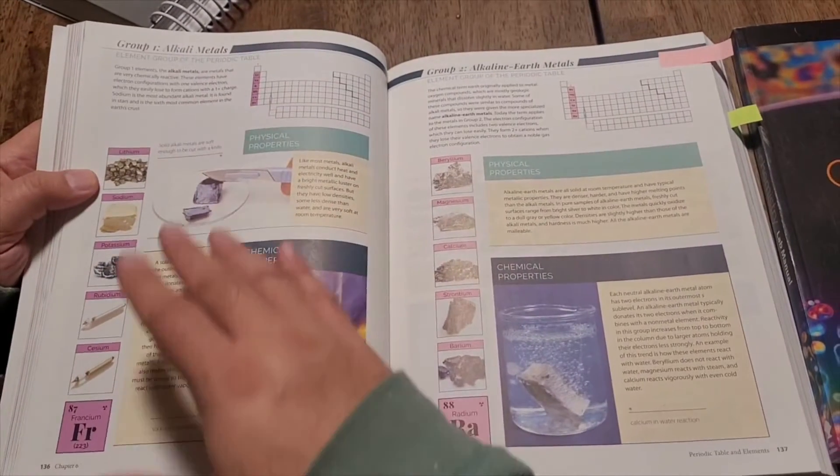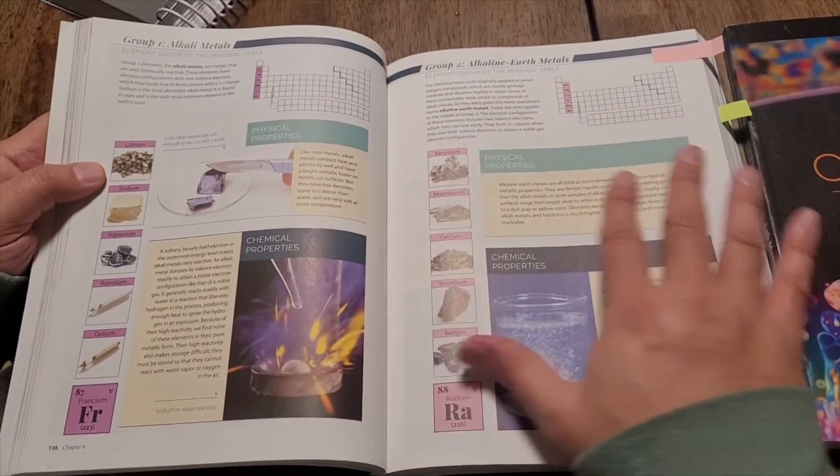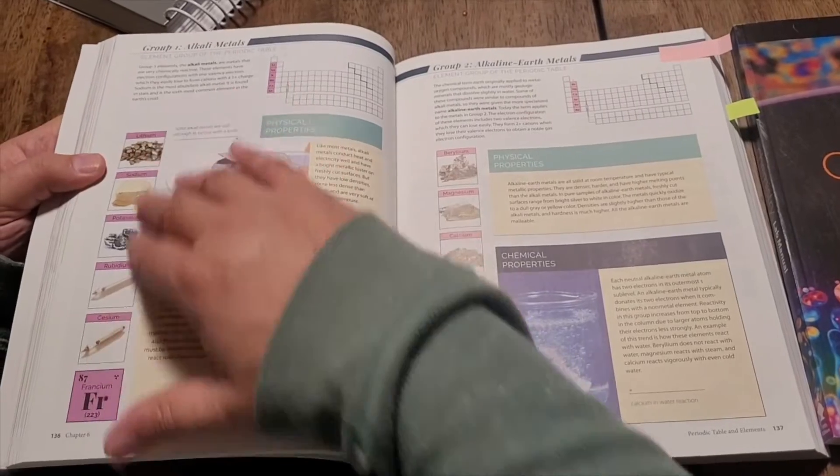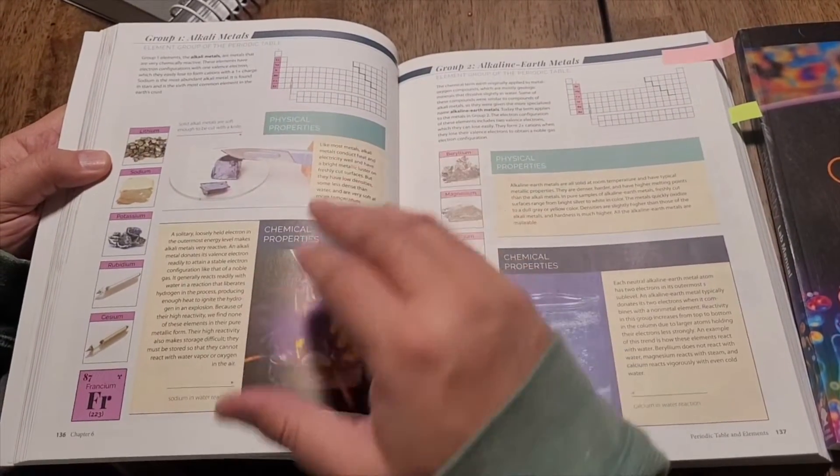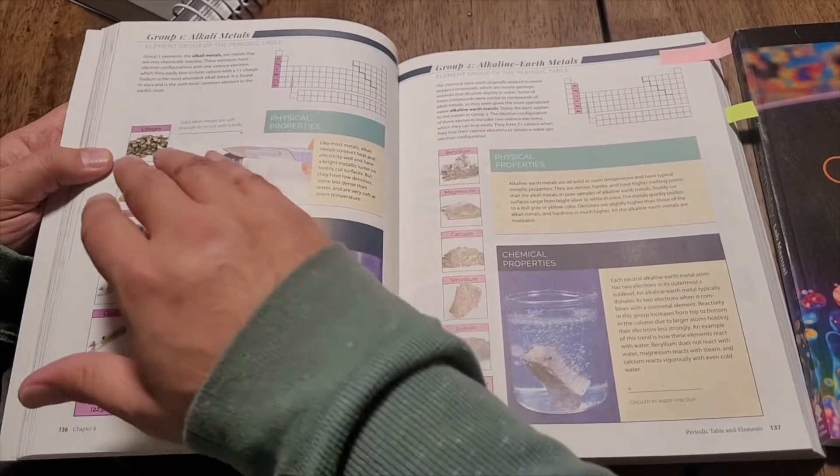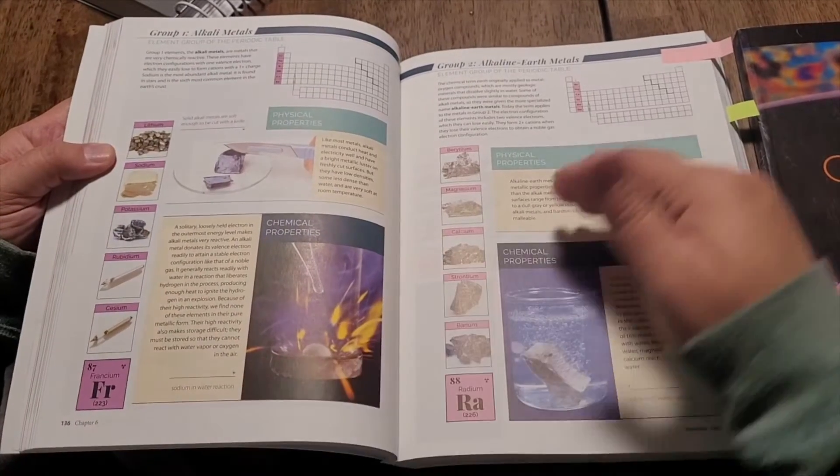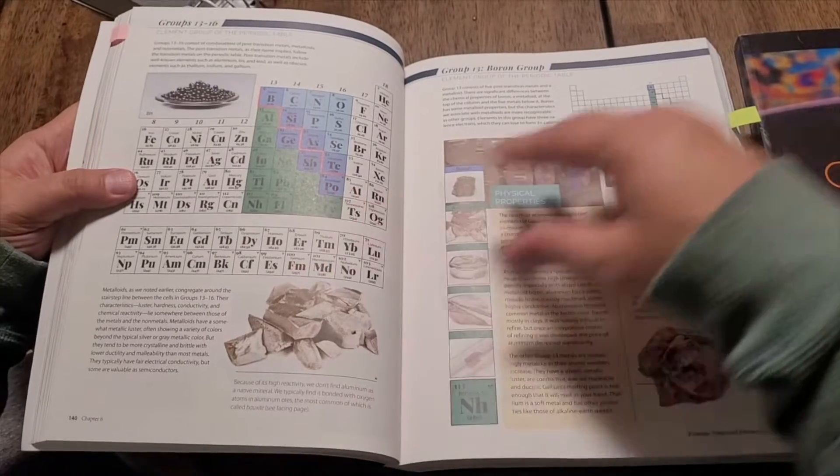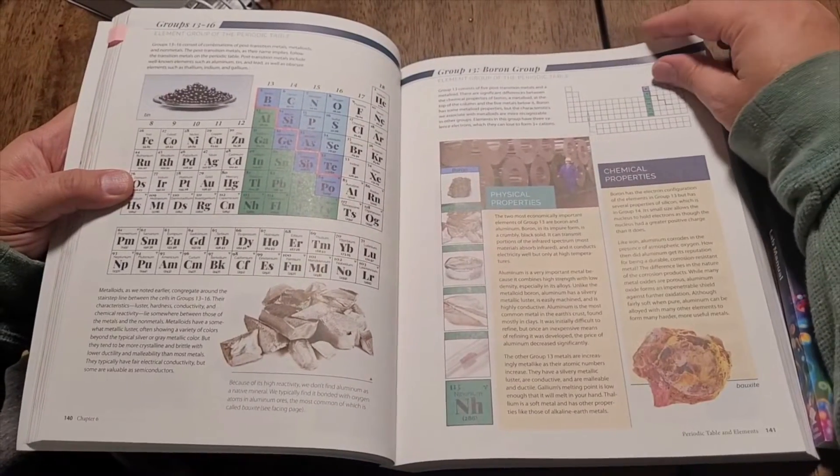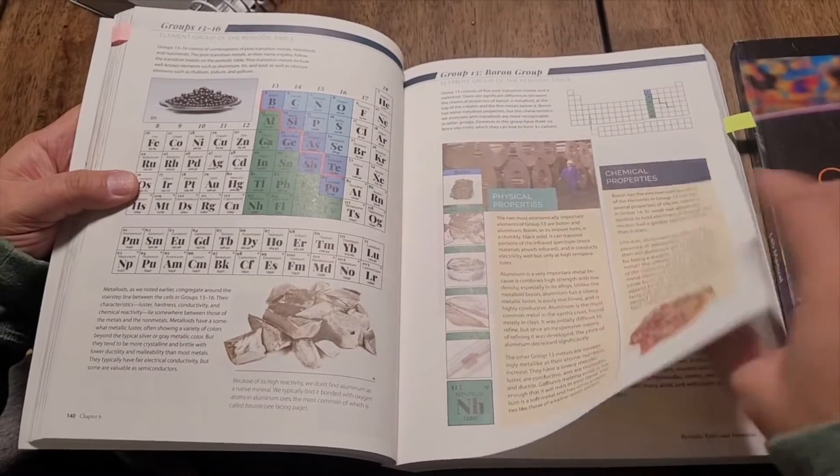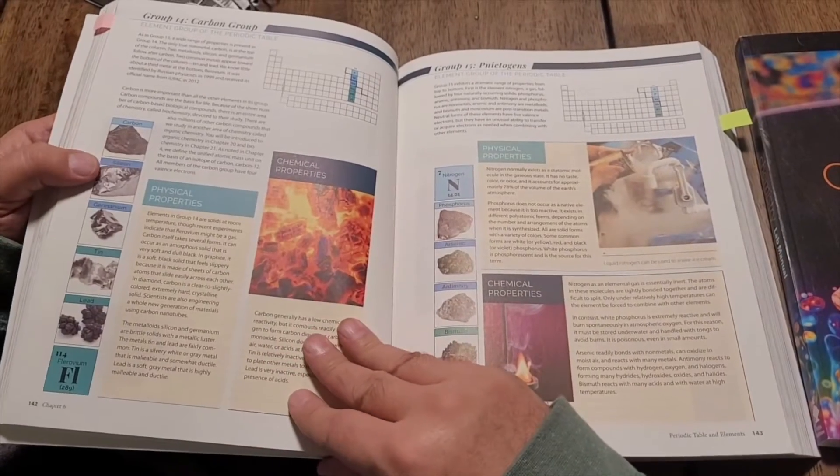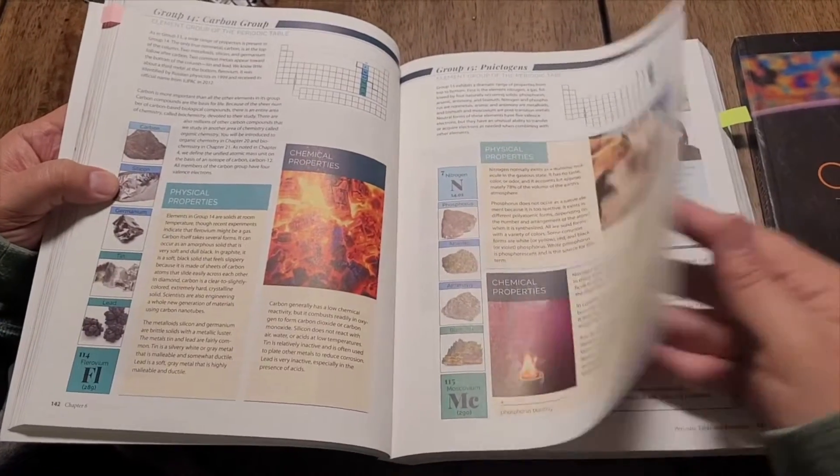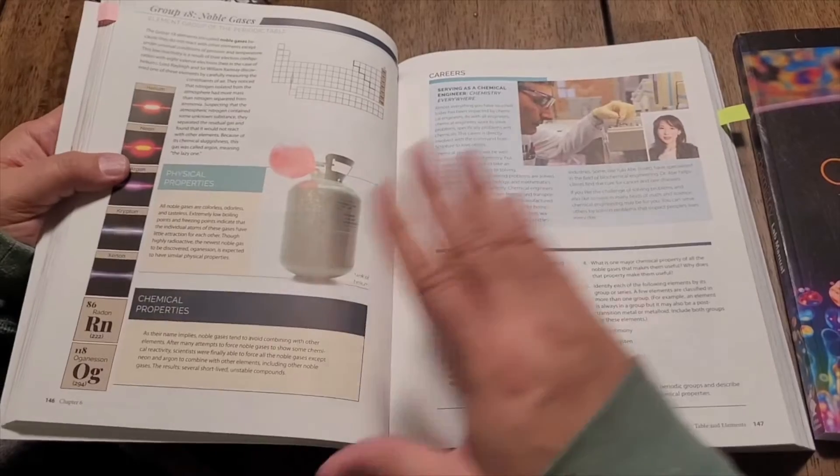Every group on the periodic table, every column gets its own page that describes the appearance of the element, the physical properties and the chemical properties and what kinds of charges they have. Every single one. This is awesome. And I really wish I could steal it from my classroom. And they're beautiful pictures. Absolutely stunning and really well done.